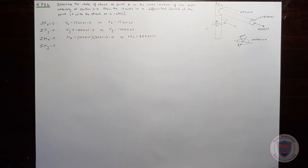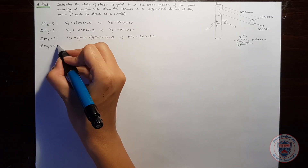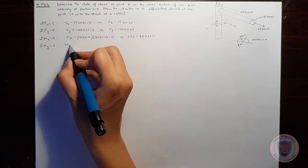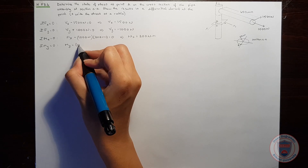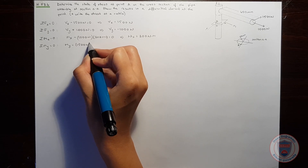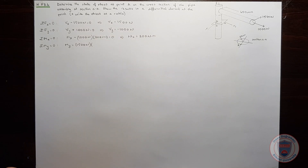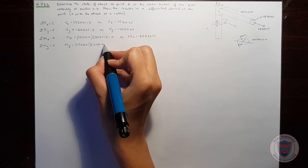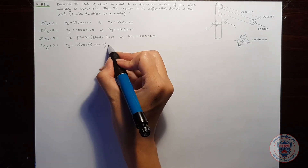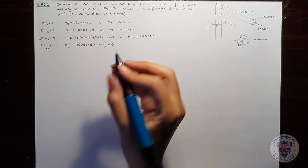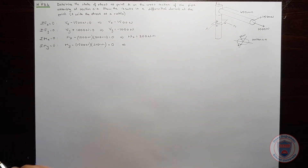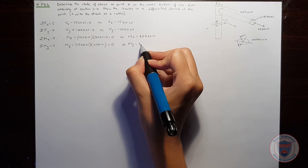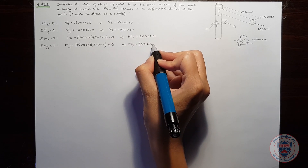The sum of moments in the y direction will also be zero. In the y direction, we have My minus 1500 newtons times 200 millimeters equals zero, so that My becomes 300 newton-meters.